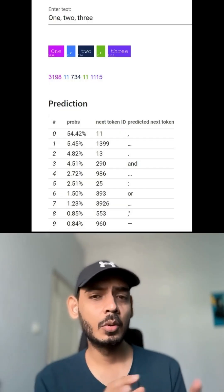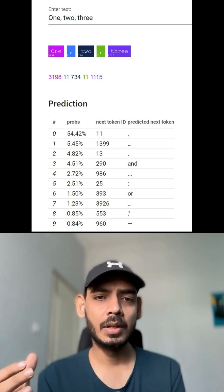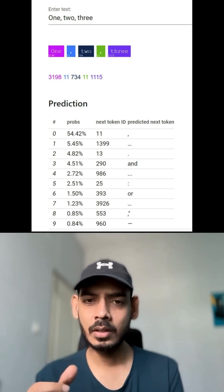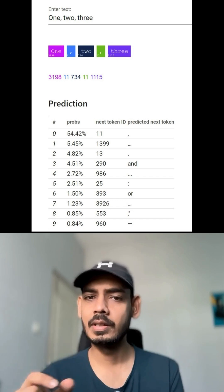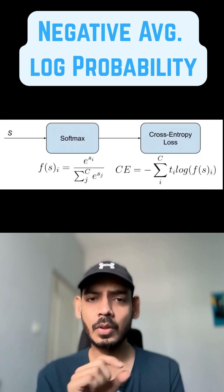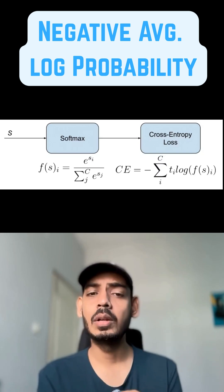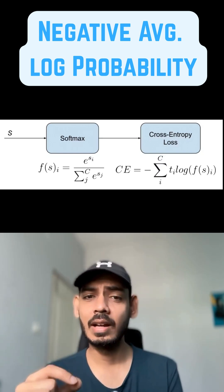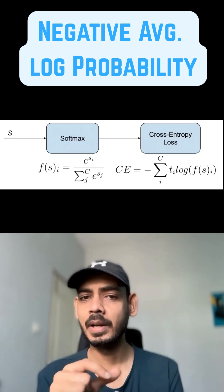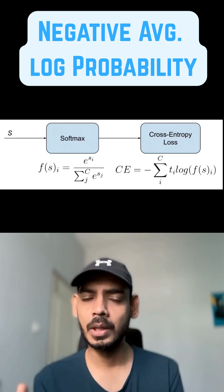Now the goal of the training is to maximize the probability of the current target token appearing next in the sequence. So to measure the success, we calculate the negative average log probability, which is handled in PyTorch using cross entropy.